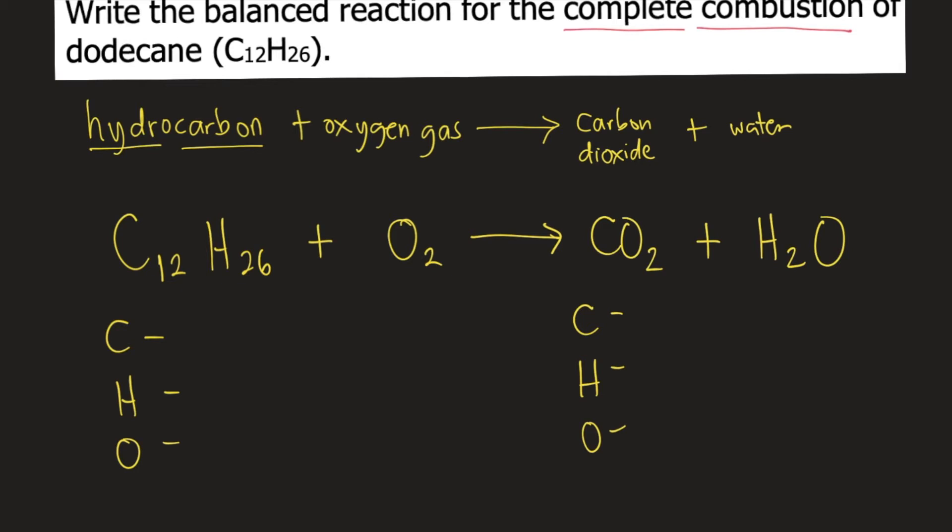So let's start with carbon. On the left side, we have 12. On the right side, we only have 1. So to balance the number of carbon, you put the coefficient 12 on carbon dioxide. Because 12 times 1, that's equal to 12. So carbon is already balanced.